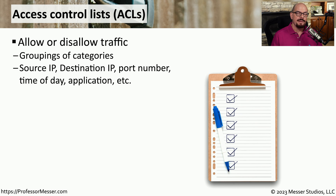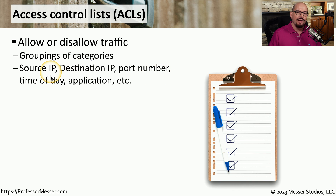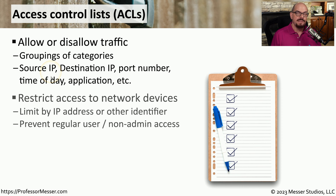It can be easy to implement this separation using an ACL, or access control list. This provides a way to allow or disallow traffic through your network, operating systems, or other technologies. You might have groupings of different categories like source IP address, destination IP address, port numbers, time of day, or any other detail you can use to control traffic through a device. This access may be based on IP address, where certain IP addresses can access other IP addresses, and blocks may be installed for other ranges of addresses.